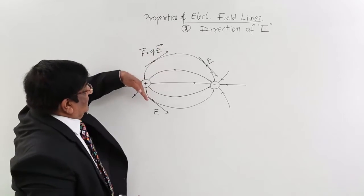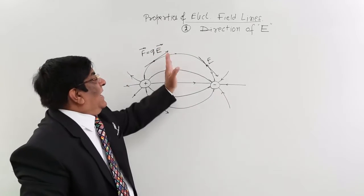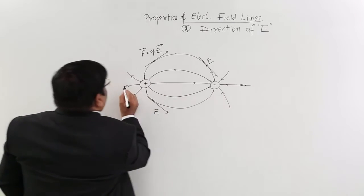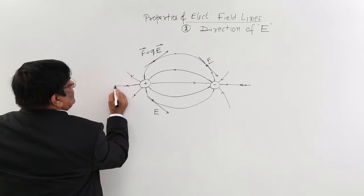See, the direction varies at different points along the field lines - here the direction is this way, here it's another way, and there are so many various directions at different locations.